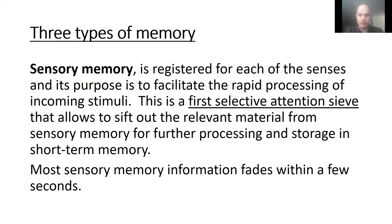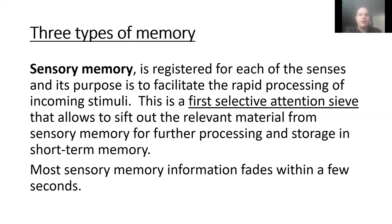Sensory memory is a flow of information from outside. This flow includes first the information contact with the receptors — stimuli contact with receptors and then turn into an electrical signal — and then they move to the central nervous system through nerve fibers. The first 'bus stop' of this information is the thalamus, where sensory memory is completed.